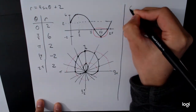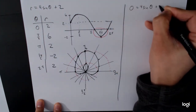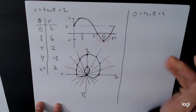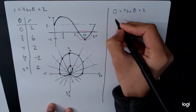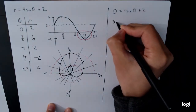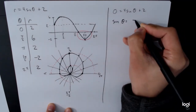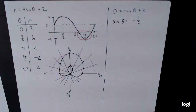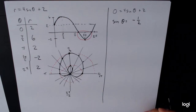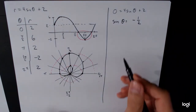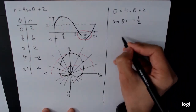So we set 0 equals 4 sine theta plus 2 and do the algebra. Subtracting 2 and dividing both sides by 4, we get sine theta is equal to negative 1 half.